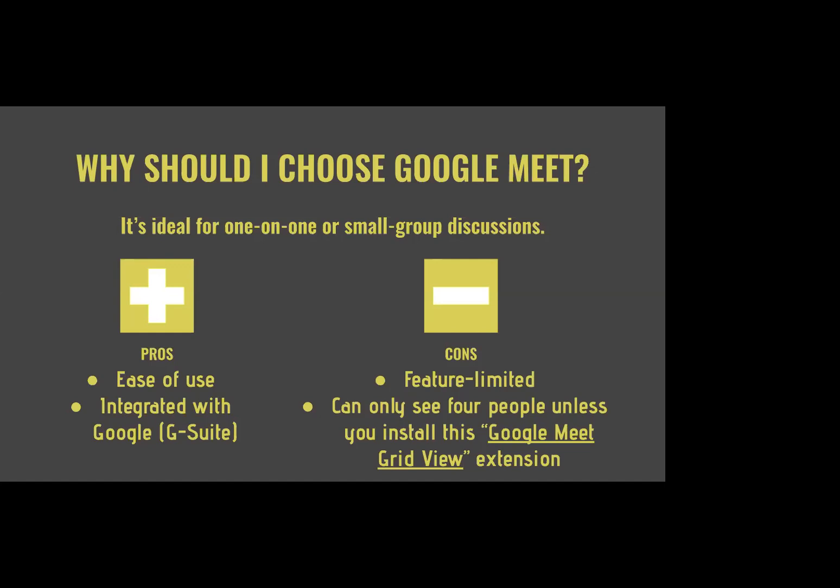Normally you can only see about four people on the screen, but there is a Google Meet Grid View where you can install it as an extension for Chrome and actually see everybody on your screen at once. So that used to be a limitation that's starting to change.